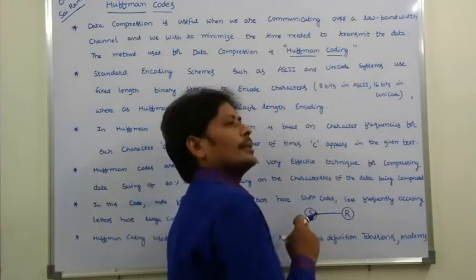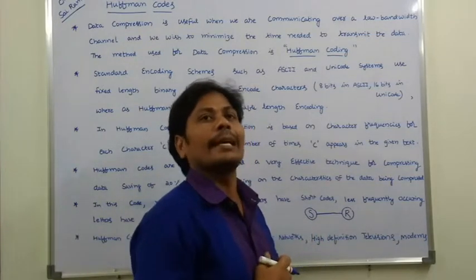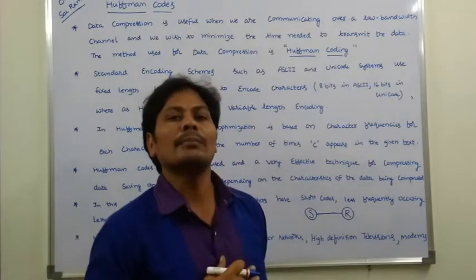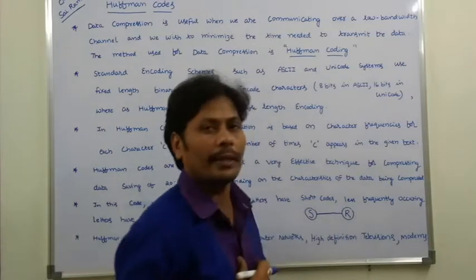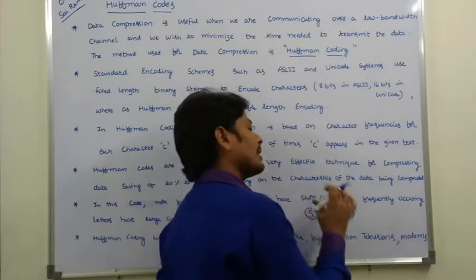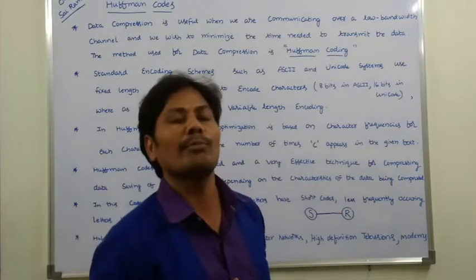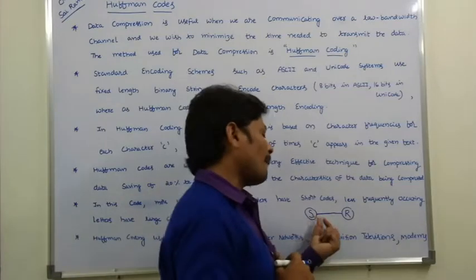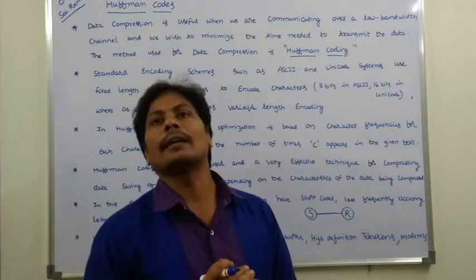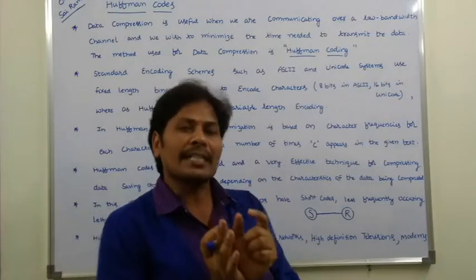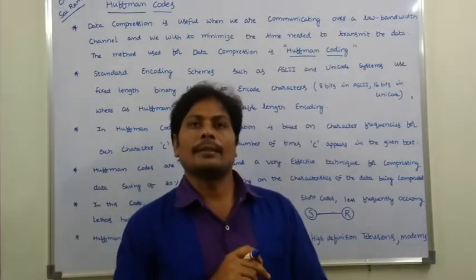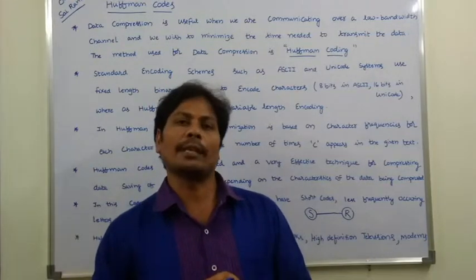In this technique, the message sent by the sender is converted into some encoding form. That encoded message is sent to the receiver, who then decodes it to recover the original content. This is the main idea of the Huffman coding technique — it is used for compressing a given message so that the time taken to send the message is very less.